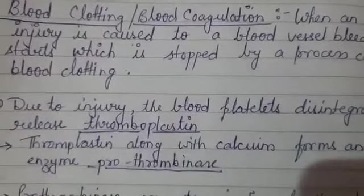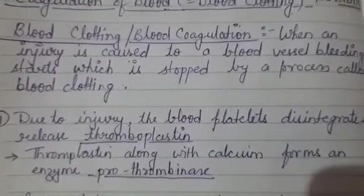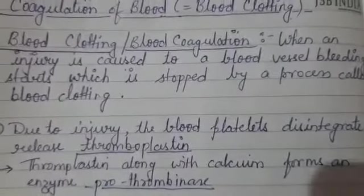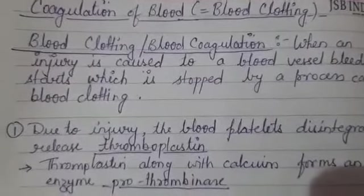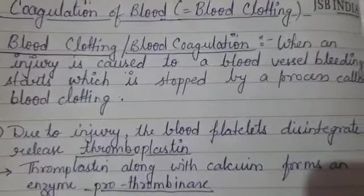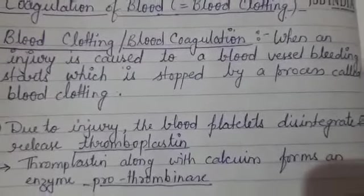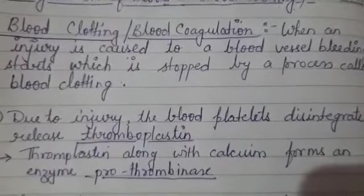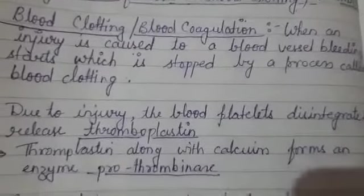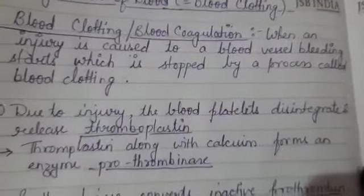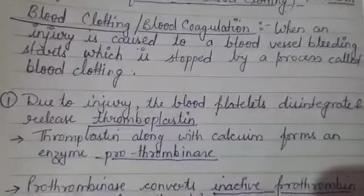Blood clotting should be completed within three to six minutes depending on the injury, and it is very important for the survival of a person. When blood is in intact vessels it should never coagulate — it should always remain in liquid form. But once any vessel gets ruptured, bleeding must be stopped as soon as possible. This process is a proper cascade system where inactive substances become active one by one after a blood vessel is injured.